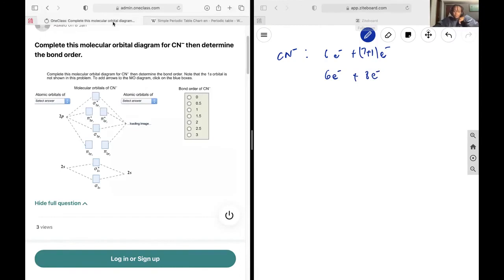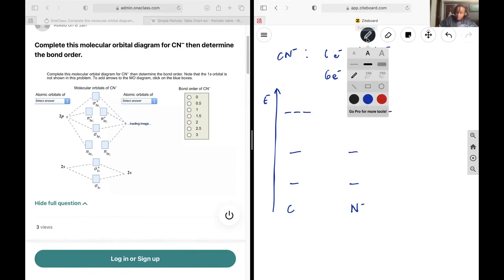This means that if I draw my MO diagram with potential energy and I have carbon and N-, 1s, 2s, 2p. Let's fill in our electrons, so for carbon I have 2, 4, 6, for nitrogen I have 2, 4, 6, 7, 8.